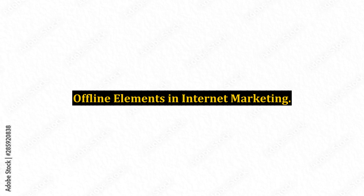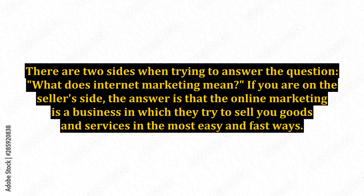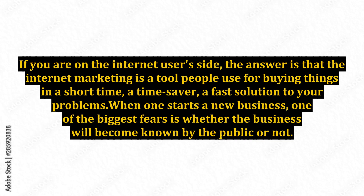Offline Elements in Internet Marketing. There are two sides when trying to answer the question: what does internet marketing mean? If you are on the seller's side, the answer is that online marketing is a business in which they try to sell you goods and services in the most easy and fast ways. If you are on the internet user's side, the answer is that internet marketing is a tool people use for buying things in a short time — a time saver, a fast solution to your problems.